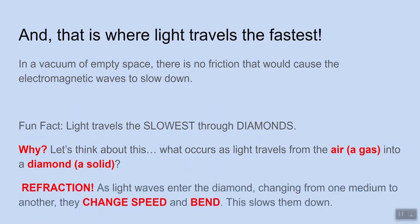Right, we know it refracts. So as light waves enter the diamond, changing from one medium to another, from the air around it into that diamond, the light waves are changing speed. Specifically, they are slowing down. So light travels the fastest through a vacuum and the slowest through things like solids and the absolute slowest through diamonds.